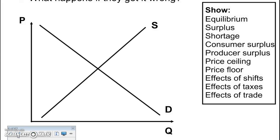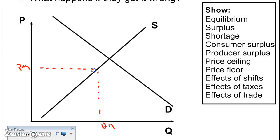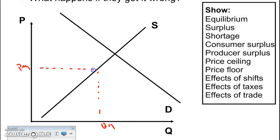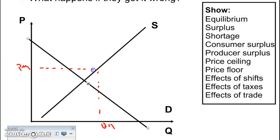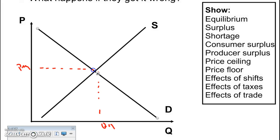I'm going to show you the slides with the causes of shifts in just a moment, but I want you to review what actually happens to price and quantity when supply and demand shift. Our equilibrium price and quantity are here. If demand shifts to the right, both price and quantity will increase. If demand shifts to the left, both equilibrium quantity and equilibrium price will decrease.